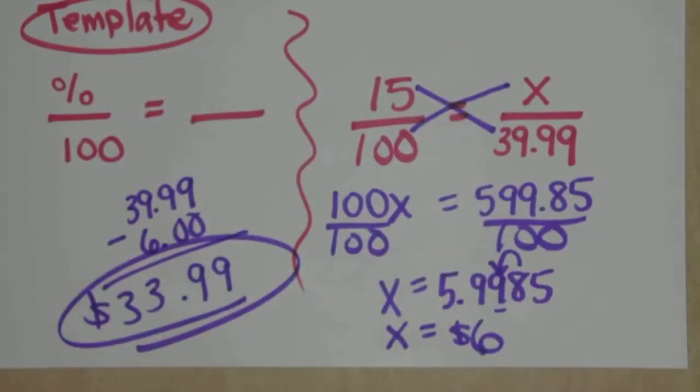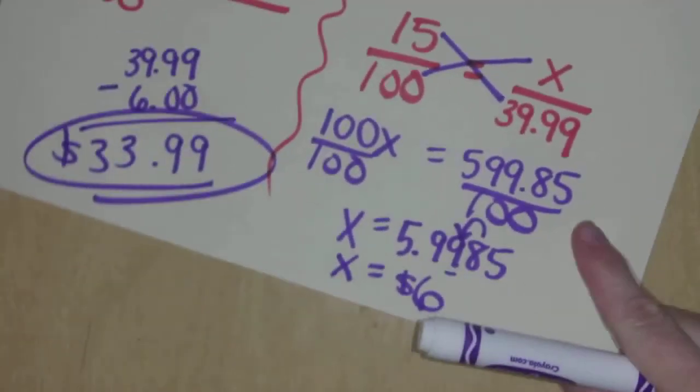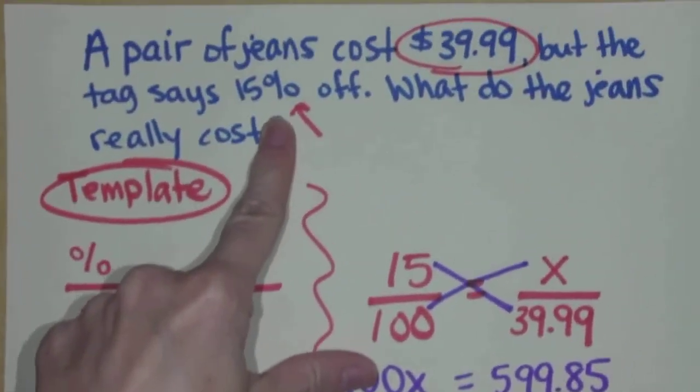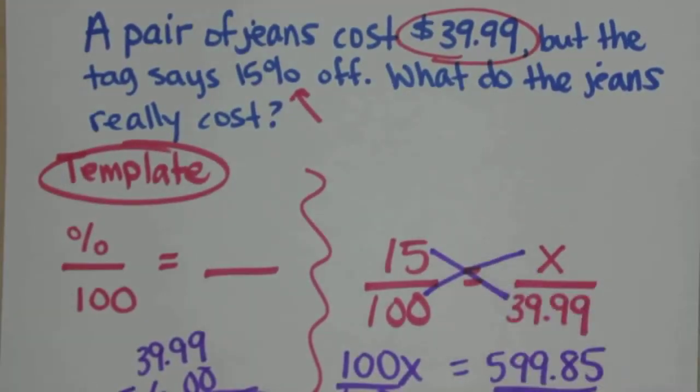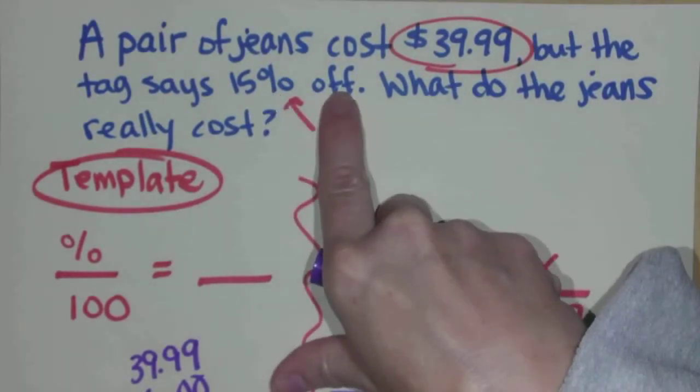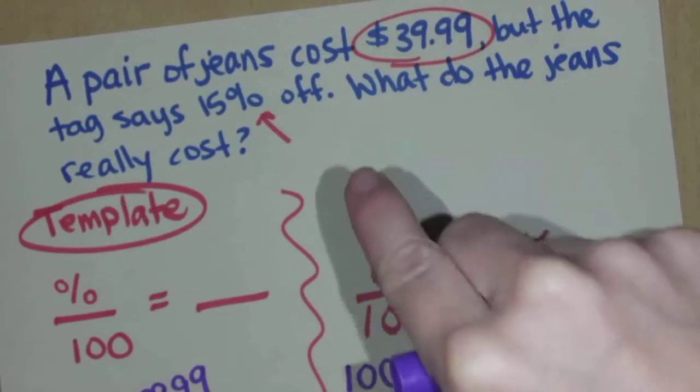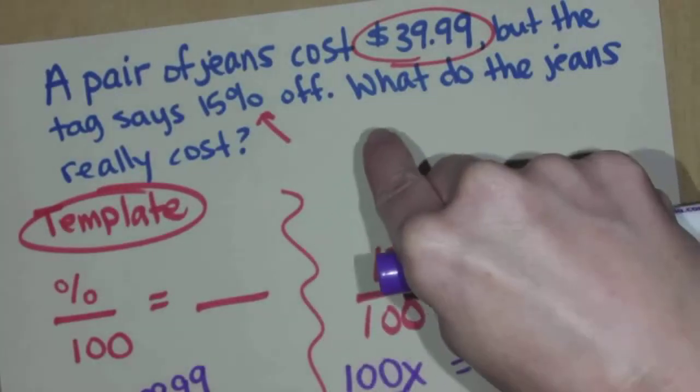Here's another way you could do it. Using the same exact template, if you're getting 15% off of the jeans, then doesn't that mean the jeans still cost 85% of the original cost? Think about that. If you're getting 15% off, that means that you're still paying 85% for these jeans.